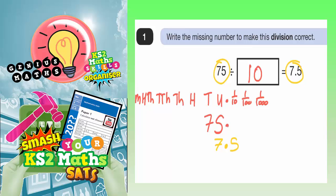Let's just put the decimal point into 75. So each of the digits has moved one place backwards — the 5 has gone from the units column into the tenths column, that's one place backwards, and the 7 has also gone from the tens column into the units column, so that's one place backwards. If the digits have moved one place backwards, then that means you must have divided by 10.